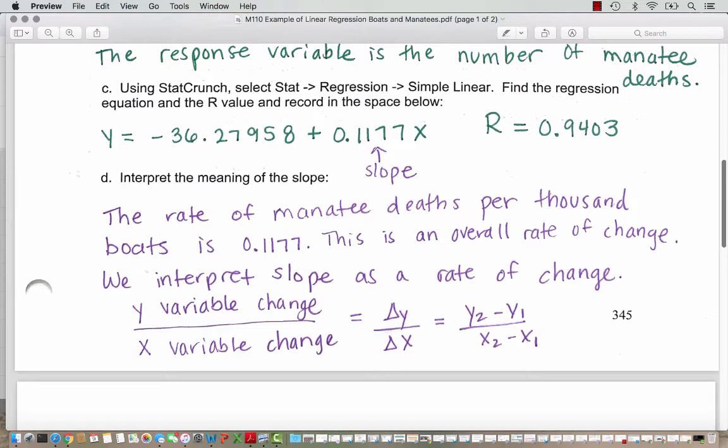You might be familiar with interpreting the slope as a rate of change. You can think about it as the y variable change per or over the x variable change. In algebra class, we often write this as change in y over change in x, where these triangles represent the change symbol. Delta is a Greek letter here and it's used in chemistry for change in temperature or in math class for change in y and change in x in the graph. And then the slope formula that we use is y2 minus y1 over x2 minus x1. This might be familiar from algebra class.